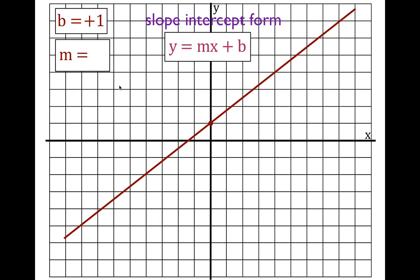Now the slope — the slope is the rise over the run. Go along the line and look for the next place where the line crosses the grid, and that would be right there at that point. We go from the y-intercept to that point. We're going to rise three and run four, so the slope is three over four — three-fourths.